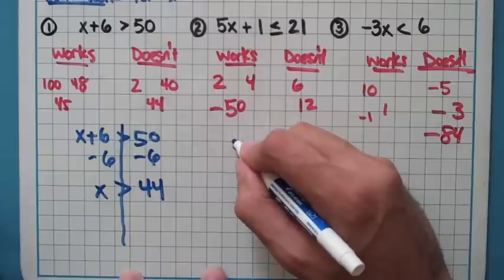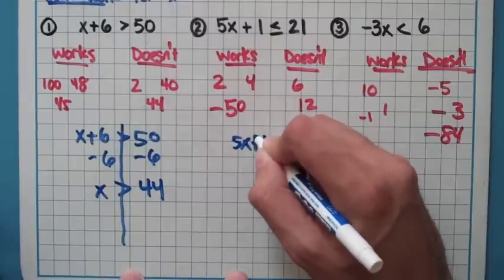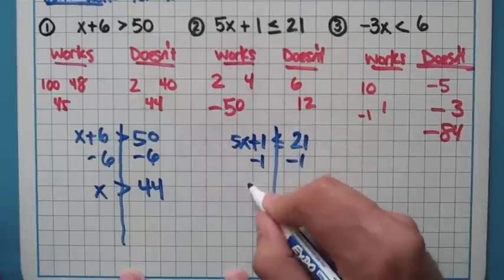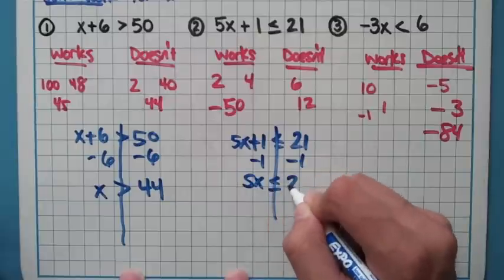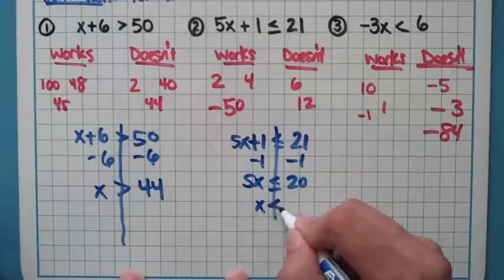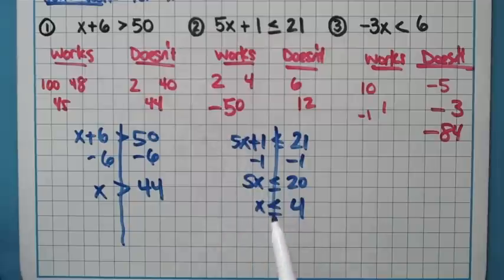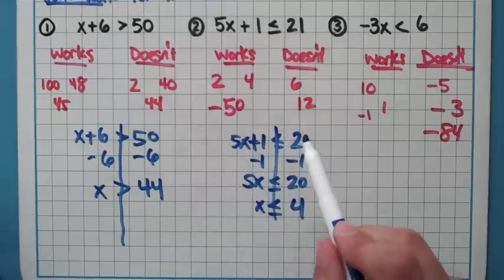On my second problem here, 5x + 1 ≤ 21, I subtract my 1, get 5x ≤ 20. Divide by 5, I get x ≤ 4. Which again seems to check out. Numbers that work were less than or equal to 4. Numbers that didn't work were the numbers that were bigger.